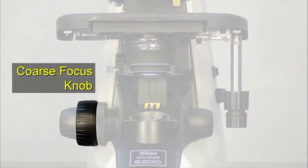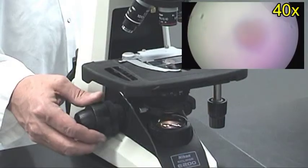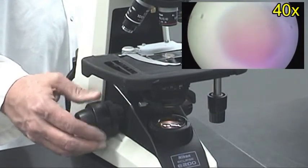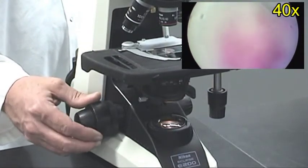The coarse focus knob is the larger knob on the right side. It moves the stage in large increments to bring the specimen into view quickly.